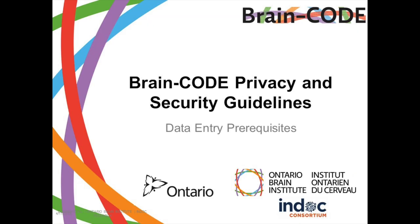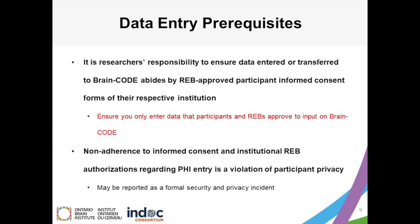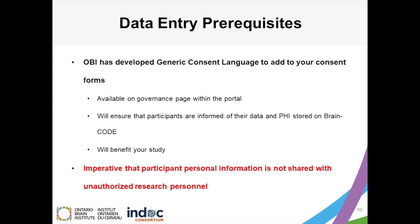BrainCode Privacy and Security Guidelines: Data Entry Prerequisites. While OBI takes many precautions to ensure that unapproved PHI is not entered into the BrainCode database, it is ultimately the responsibility of researchers to ensure that data entered or transferred to BrainCode abides by the REB-approved participant informed consent forms of their respective institution. Please ensure you only enter data that participants and REBs approve to input on BrainCode. Non-adherence to informed consent and institutional REB authorizations regarding PHI entry is a violation of participant privacy and may be reported as a formal security and privacy incident. OBI has developed generic consent language available on the Governance page to add to your consent forms. It is imperative that participant personal information is not shared with unauthorized research personnel.